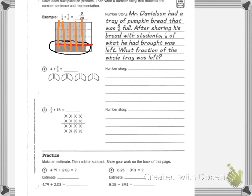So now you have 4 times 2 thirds equals. First, solve. I can write it on the right-hand side — it can be 4 over 1 times 2 thirds. So, 4 times 2 is 8, and 1 times 3 is 3. So I have 8 thirds.